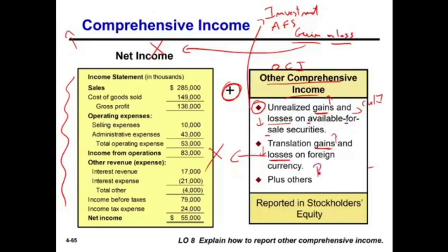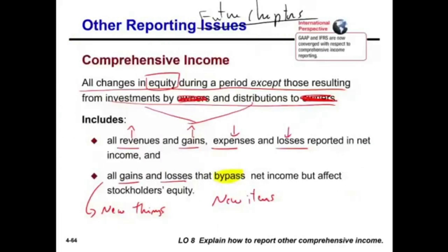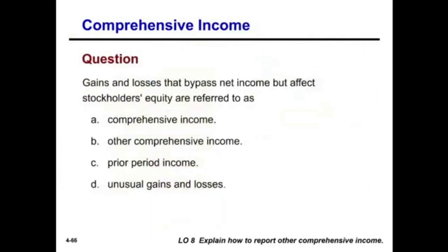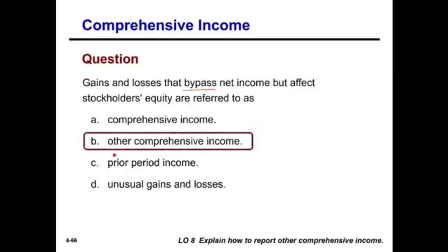Plus other items — one of them is pension adjustments. So comprehensive income captures things that affect equity but don't affect net income. We put them in this item called other comprehensive income (OCI). Once again, these are gains and losses that bypass net income but affect stockholders' equity — they are not income statement accounts.